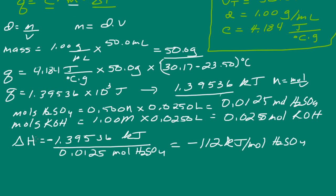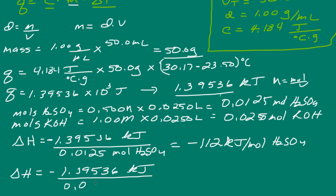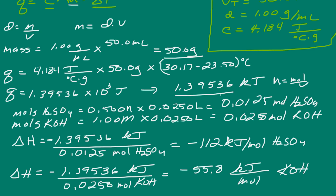Now let's do the same for potassium hydroxide. Delta H is equal to negative 1.39536 kilojoules — I like to keep many digits to avoid introducing error. For potassium hydroxide, we have 0.025 moles, giving us negative 55.8 kilojoules per mole of potassium hydroxide. The per mole of potassium sulfate gives the same value as per mole of sulfuric acid, and per mole of water gives the same value as per mole of potassium hydroxide.